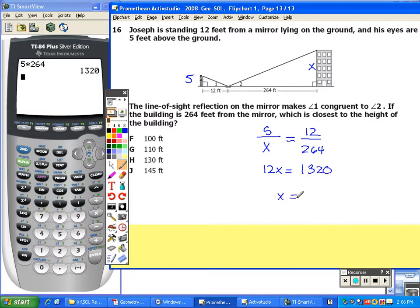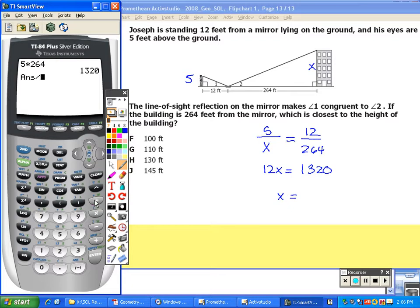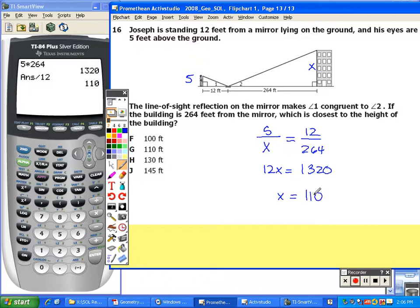When I divide both sides by 12, I end up with 110, which is closest to the height of the building. The correct choice is G, 110 feet.